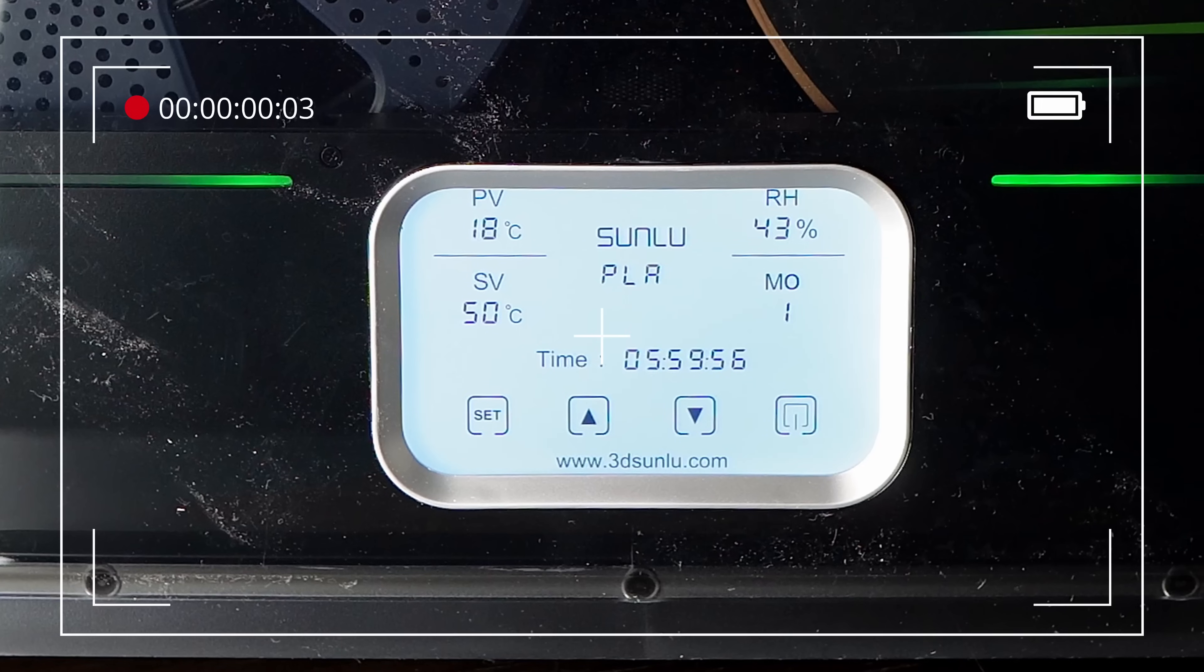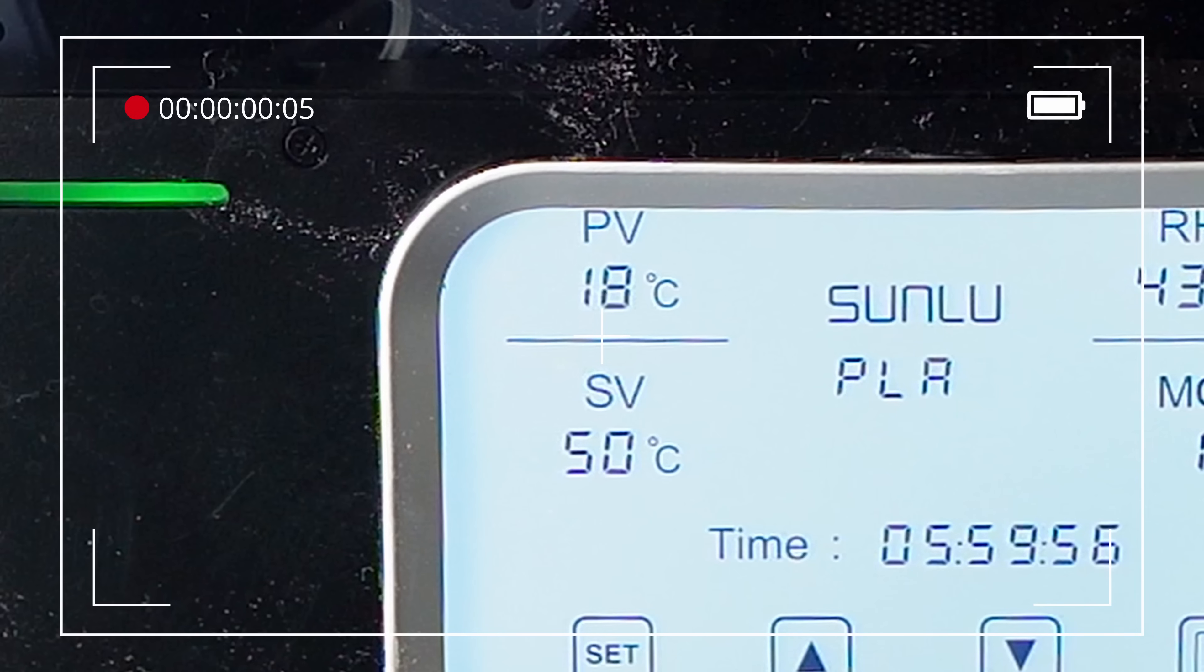There are a few things to consider when printing with TPU. The extruder type, print speed, retraction, moisture levels, and temperature. Temperature. Temperature. Temperature. Oh, what about temperature?